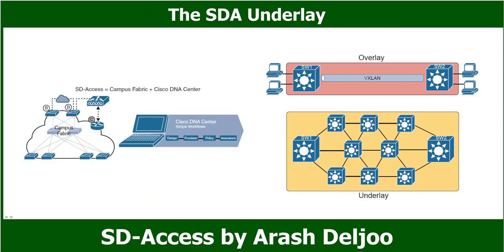The SDA underlay exists to provide connectivity between the nodes in the SDA environment for the purpose of supporting VXLAN tunnels in the overlay network. To do that, the underlay includes the switches, routers, cables, and wireless links used to create the physical network. It also includes the configuration and operation of the underlay so it can support the workload of the overlay network.